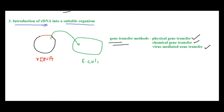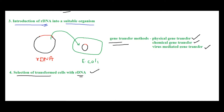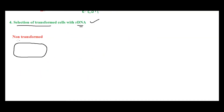Once we have done the gene transfer, the next step is selection of transformed cells with rDNA. We perform this step because there are three possibilities after completing the gene transfer step.